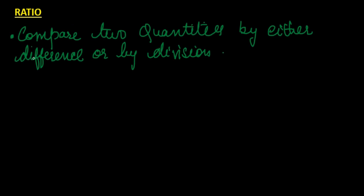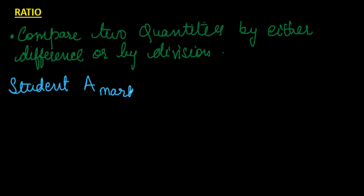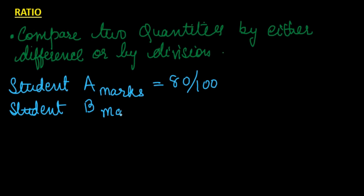Let us see what this means with an example. Suppose we have student A, and the marks obtained by student A is 80 out of 100. And we have student B, the marks obtained by this student is 40 out of 100. Now we have to compare the two marks.